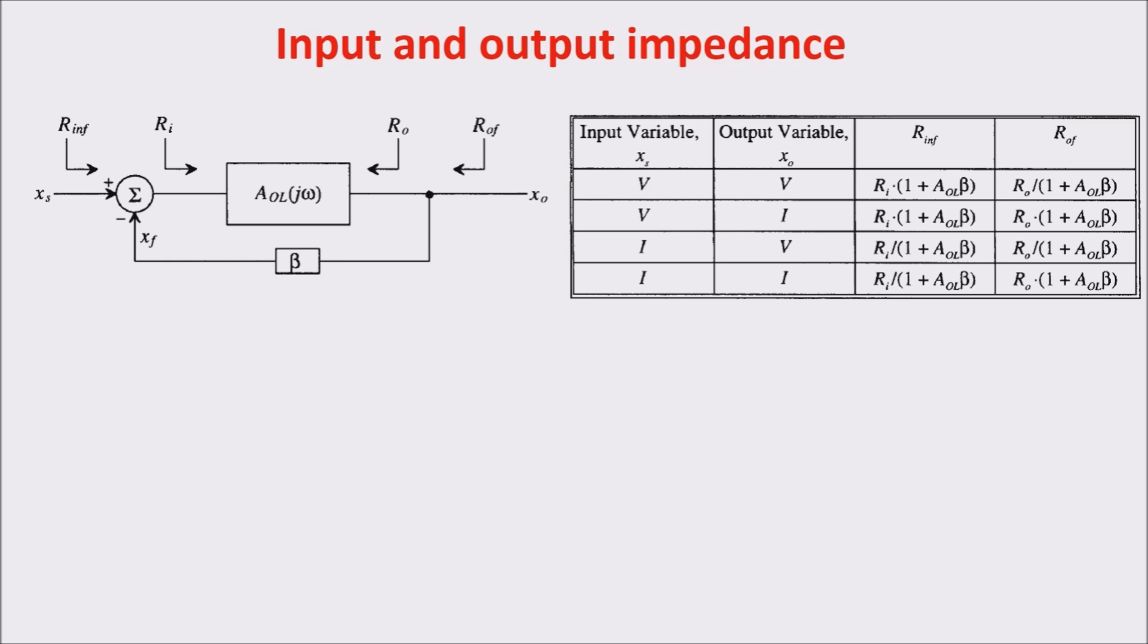In our example of a BJT with and without emitter resistor we have that an input voltage is transformed into an amplified output current so we are in this situation and we should see both input and output impedances magnified by the gain loop.